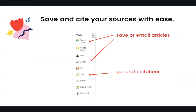Saving and citing your sources is simple when you use the handy tools embedded in library databases. When you find an article that looks promising, save it to your Google Drive or email it to yourself. Use the citation tool to generate citations in a variety of styles, such as MLA and APA. Copy and paste the citations into your works cited or references list, and you'll be well on your way.